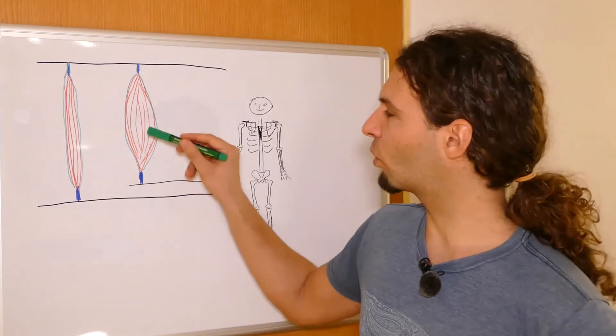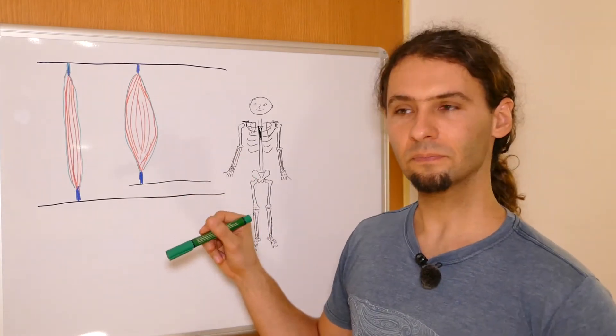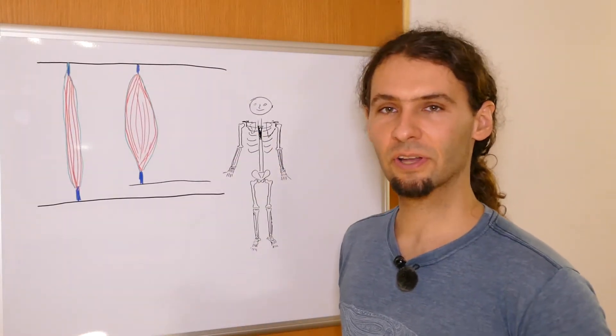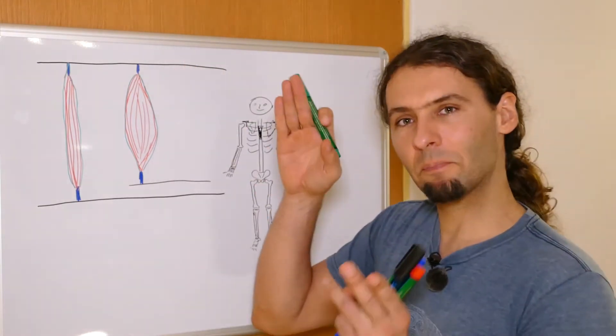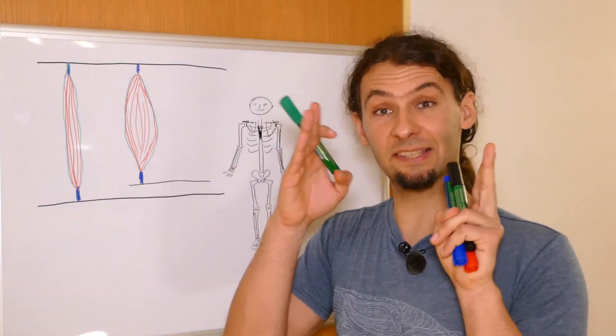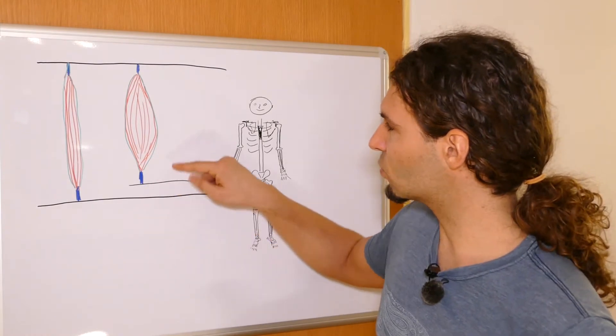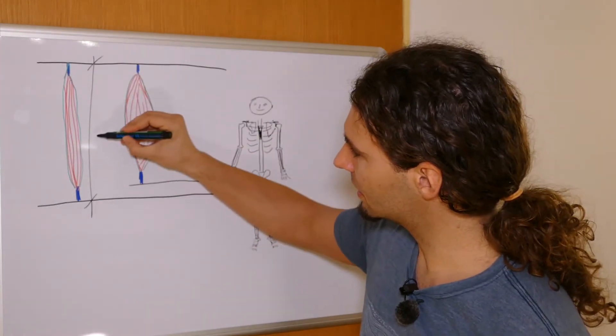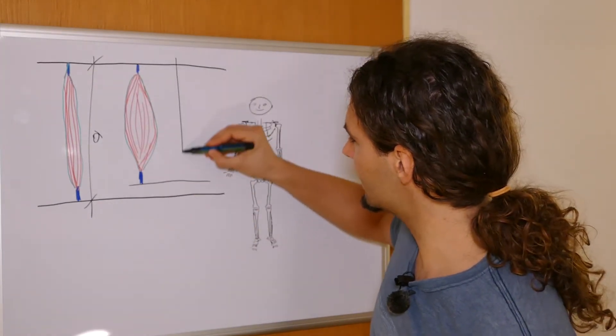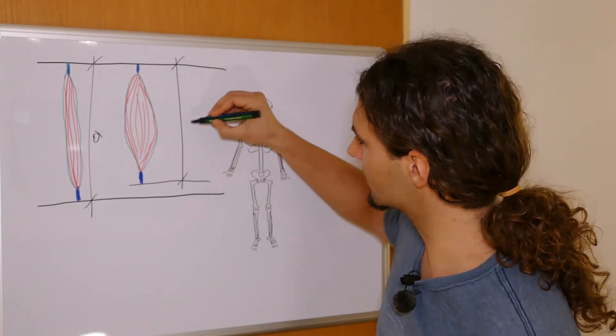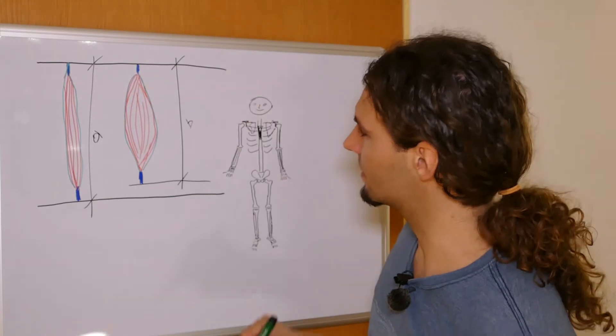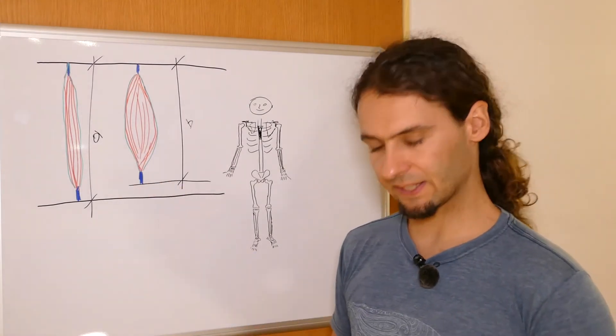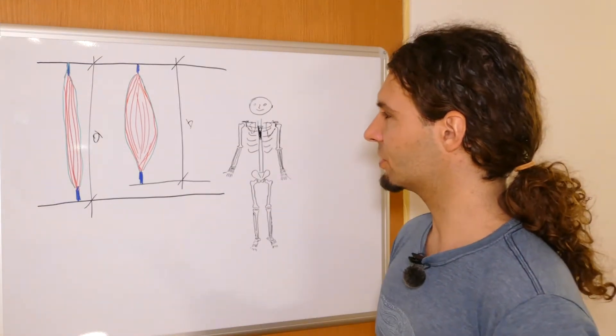The thing is, if you have more diameter but you have the same amount of actual muscle cells behind each other, then what happens is that the muscle gets a little bit shorter naturally. This is why this distance here, let's call it A, and this distance here, let's call it B, distance B is a little bit shorter than distance A. This is important to understand.